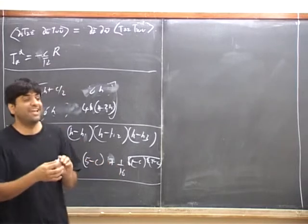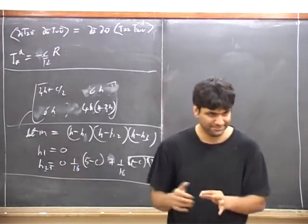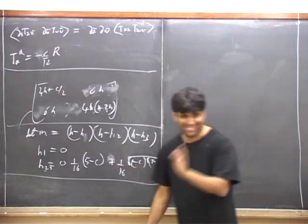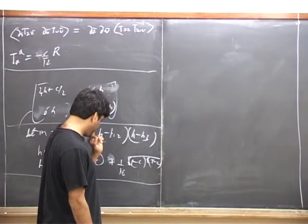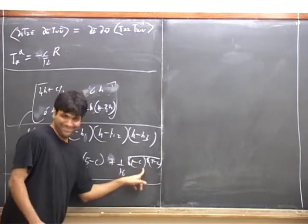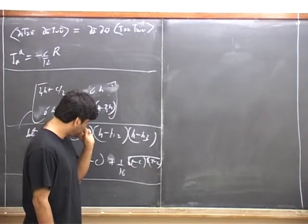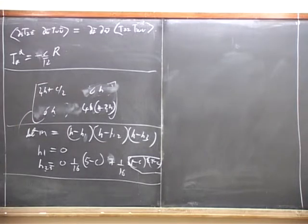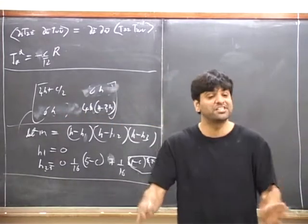This already gives you some restriction based on unitarity on the operator content of the theory with central charge C. We're getting restrictions saying that H of the theory cannot lie in a certain range depending on what C is. The constraint is that the square root is not imaginary. So for instance, if C is less than 1, then that condition is met. When C is less than 1, you find models satisfying this constraint.